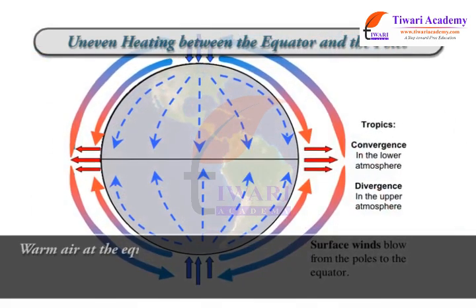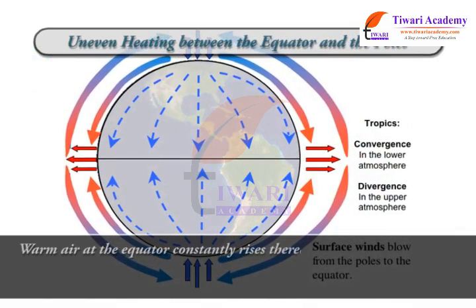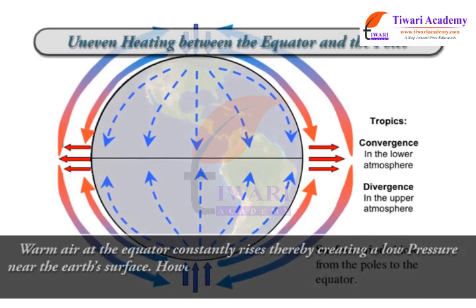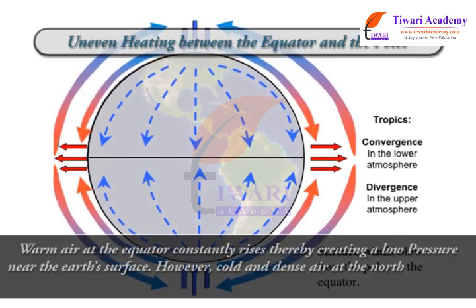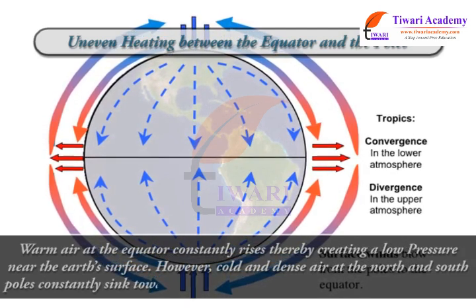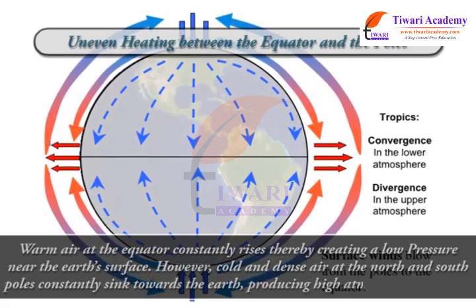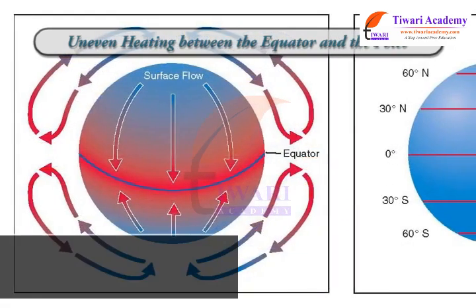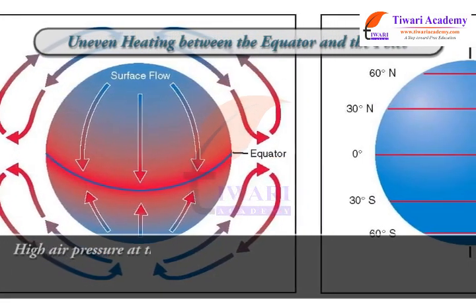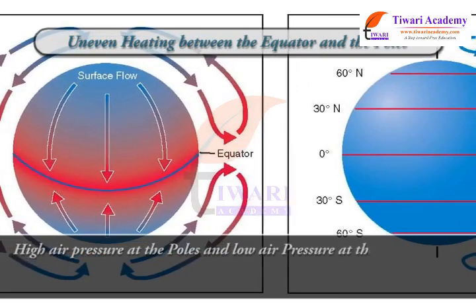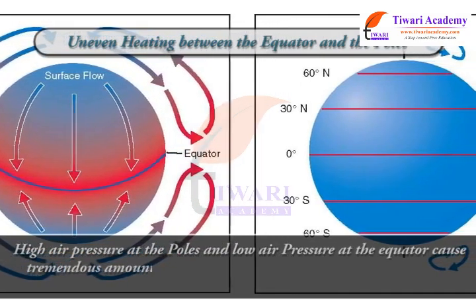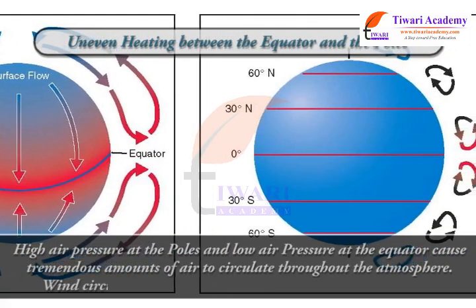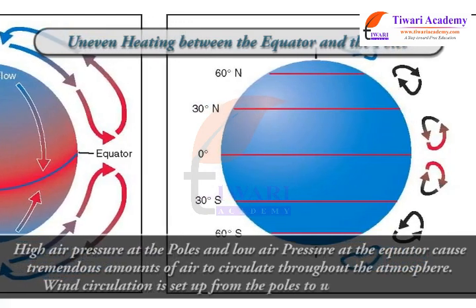Warm air at the equator constantly rises, thereby creating low pressure near the earth's surface. Cold and dense air at the north and south poles constantly sinks towards the earth, producing high atmospheric pressure. High atmospheric pressure at the poles and low air pressure at the equator cause tremendous amounts of air to circulate throughout the atmosphere. Wind circulation is set up from the poles to warmer latitudes.